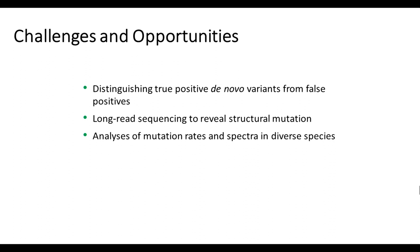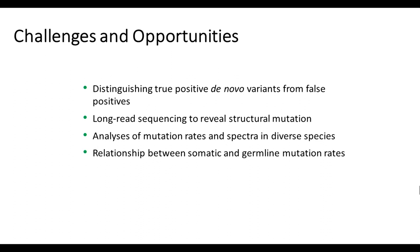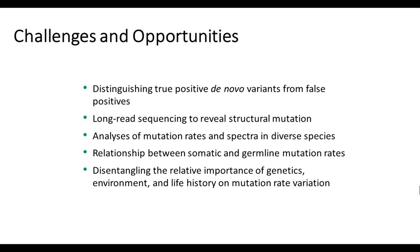We've made a lot of progress toward understanding human mutation, but a more modest number of investigations have looked at the complexity of mutation in other taxa, which limits our ability to understand how mutation evolves. I've focused on germline mutation rates here, but mutations that accumulate in the soma are obviously of intense interest, particularly for their relevance to cancer. The extent to which germline and somatic mutations may be correlated or intertwined mechanistically remains to be teased out. Finally, there are fascinating opportunities for experiments in model systems that aim to disentangle the importance of genetics, environment, and life history on observed mutation rate variation. Thank you.